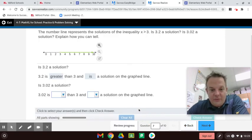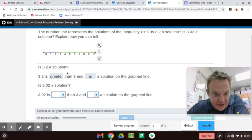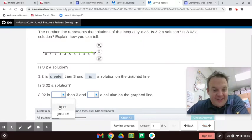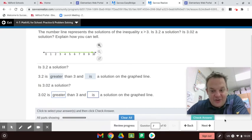So, 3.2 is greater than 3 and is a solution on the graph line. And 3 and 2 hundredths is greater than 3 and is a solution on the graph line.